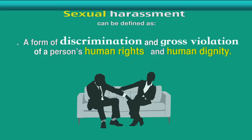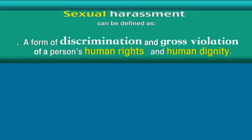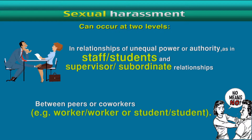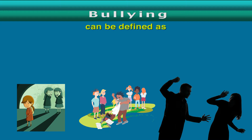Sexual harassment can be defined as a form of discrimination and gross violation of a person's human rights and human dignity. Sexual harassment can occur at two levels: in relationships of unequal power or authority, as in staff to students and supervisor to subordinate relationships, and between peers or co-workers, e.g., worker to worker or student to student.